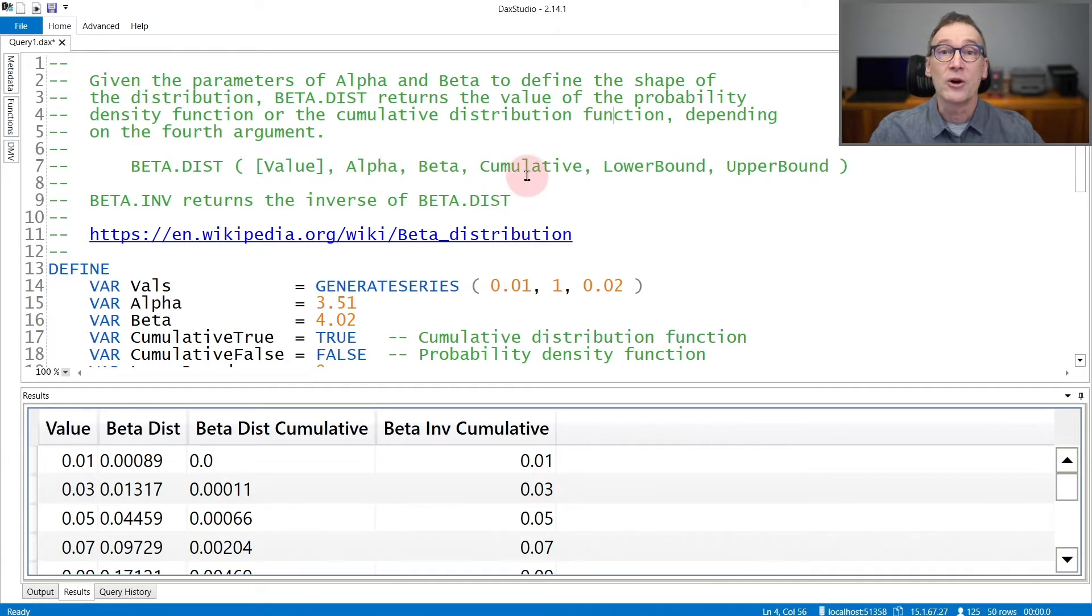You can decide to obtain only the value of the function for that given value or the cumulative total up to that value. Finally, you need to provide the lower bound and the upper bound. It is useful to look at how the two arguments alpha and beta change the shape of the statistical function.